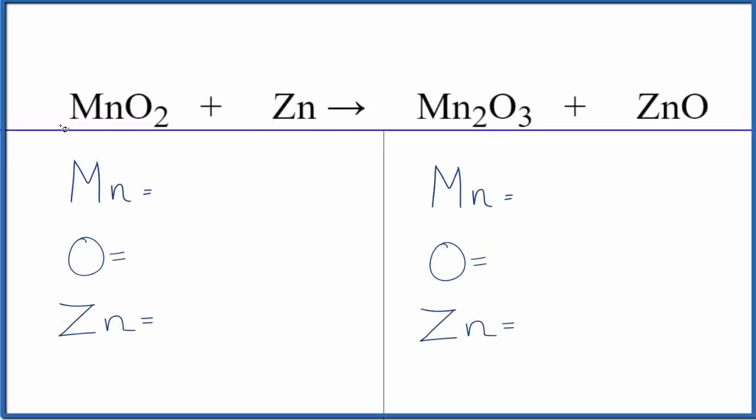In this video, we'll balance the equation for MnO2 plus Zn. This is manganese 4 oxide, and we have zinc here.